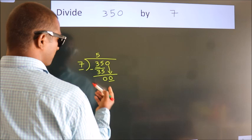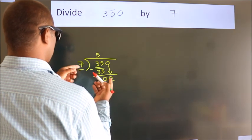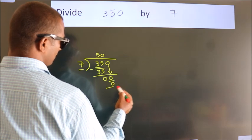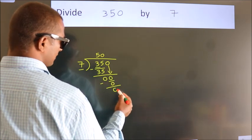So 0. When do we get 0? In 7 table. 7 times 0, 0. Now we subtract. We get 0.